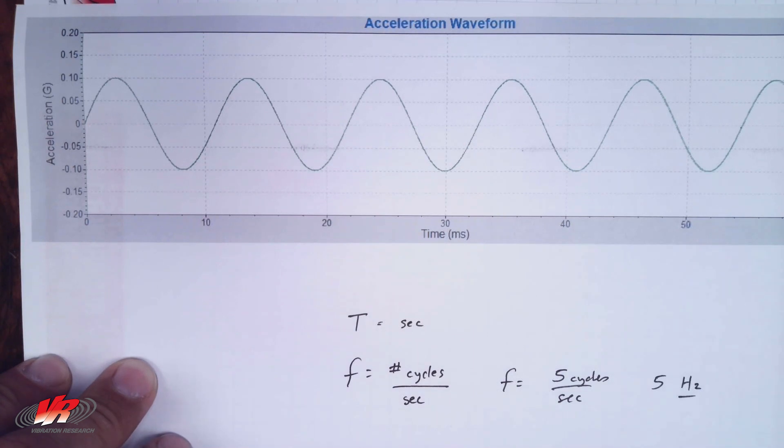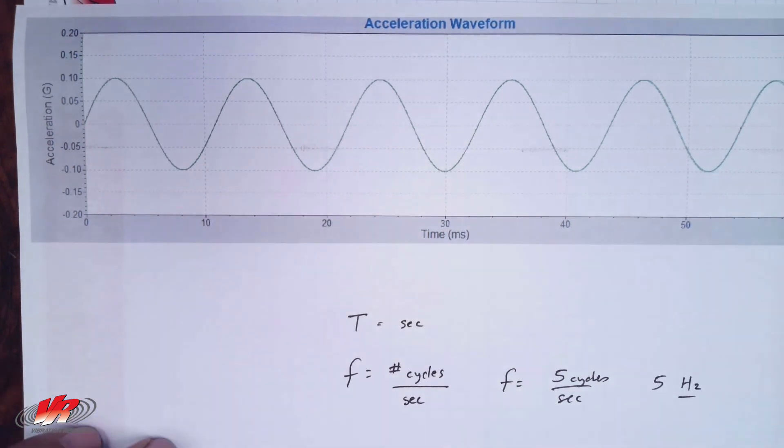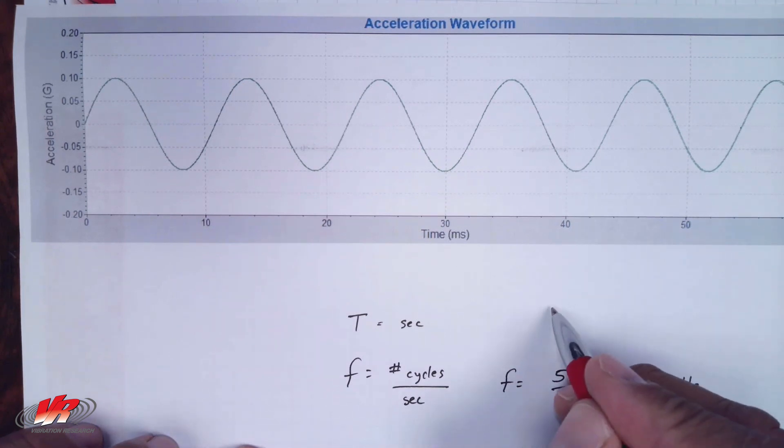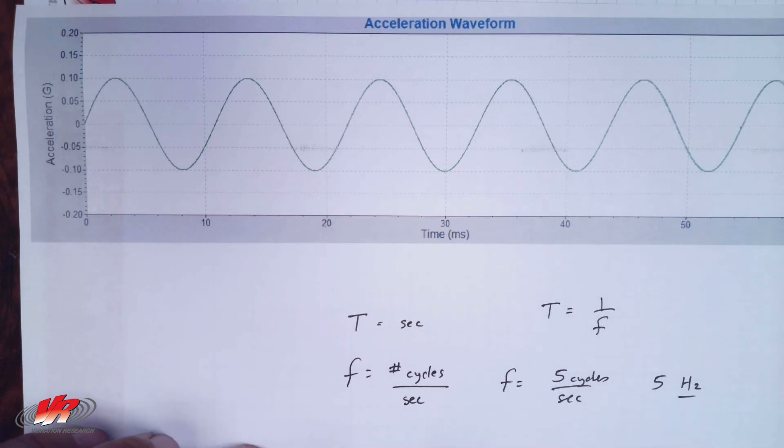The period and the frequency are related to one another. They are inverses of one another. So period is equal to one over the frequency.